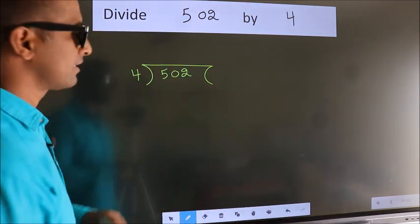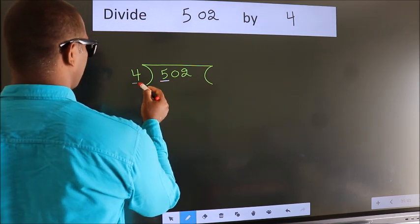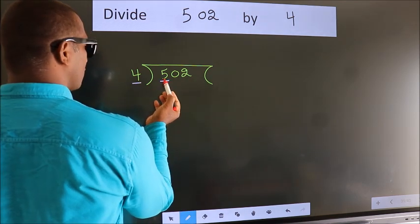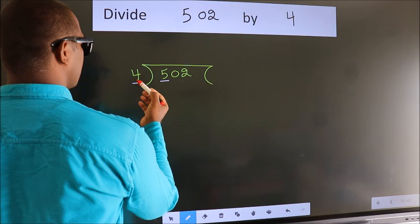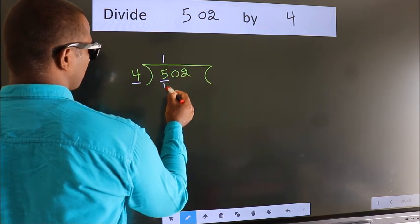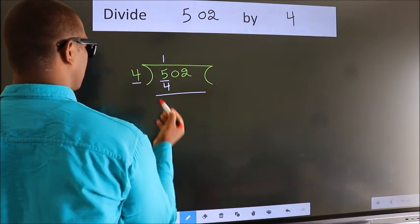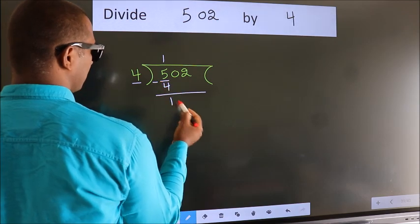Next, here we have 5, here 4. A number close to 5 in the 4 table is 4 ones, which equals 4. Now we should subtract. We get 1.